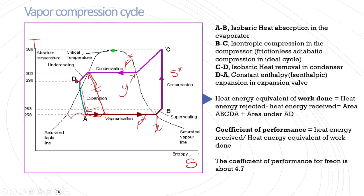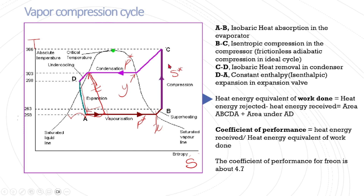From D to A, the process should be constant enthalpy — isenthalpic — through the expansion valve. The purpose of the expansion valve is only to lower the pressure to reduce the boiling temperature of the refrigerant. Any heat transfer in the expansion valve would mean losing energy, so theoretically there should be no enthalpy change. This is the basic vapor compression cycle.